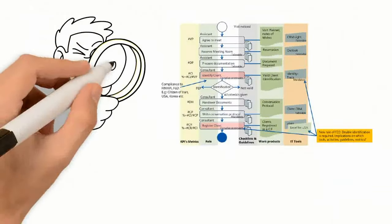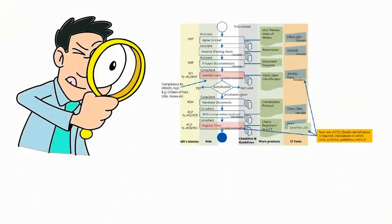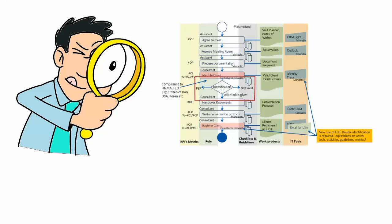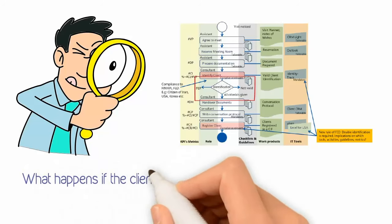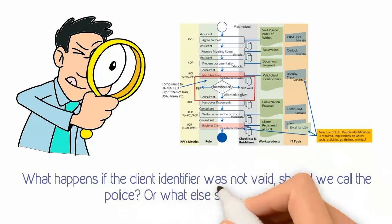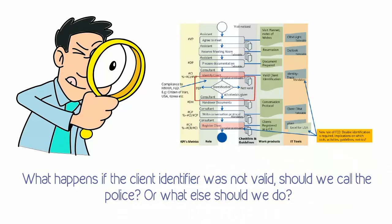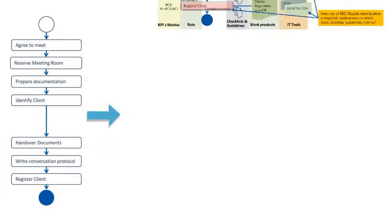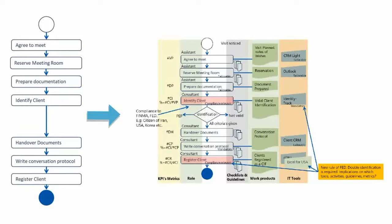Now you can see the full iceberg for a simple process. And we never talked about special cases like, what happens if the client identifier was not valid? Should we call the police? Or what else should we do? A very simple process picture turned into a model with a lot of imagination, optimized for each practitioner to ensure that the right information is at hand at the right time.